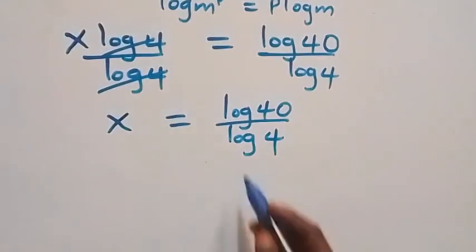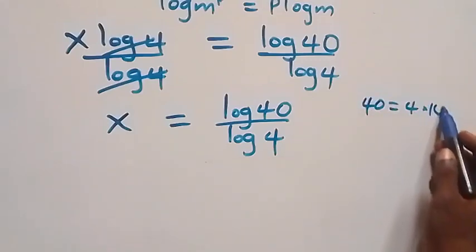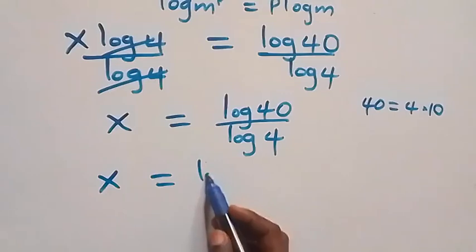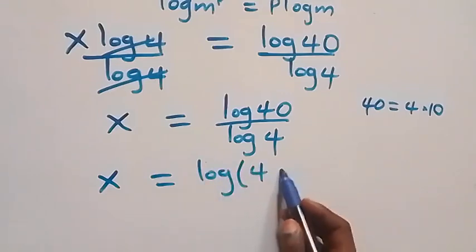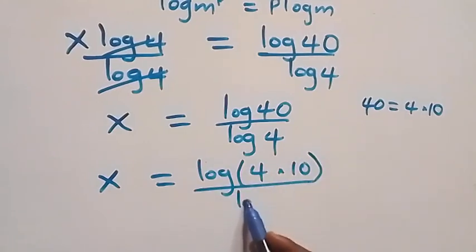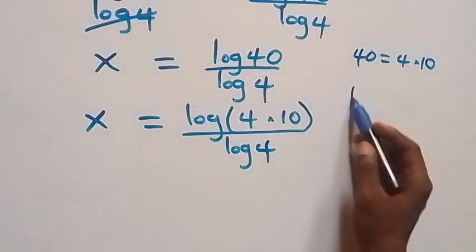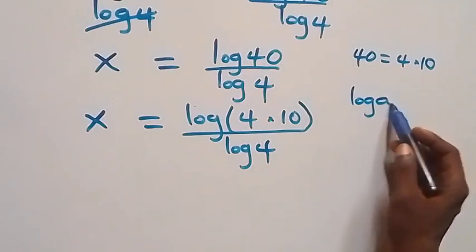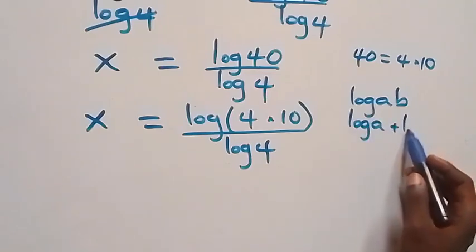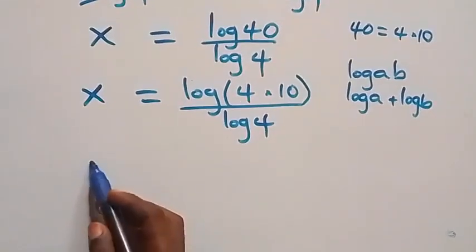Next, we can express 40 as 4 times 10, so x equals log(4 times 10) over log 4. Then, from the law of logarithm, log(a times b) can be written as log a plus log b.